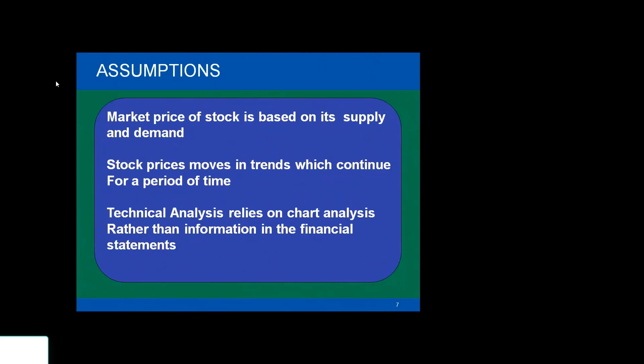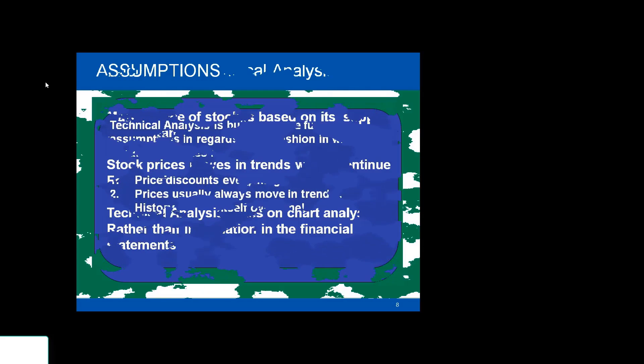The assumptions behind technical analysis are: the stock price is based on supply and demand — if demand outstrips supply, share prices go up, and if supply outstrips demand, prices fall. One assumption is that share prices always move in trends — if prices are going up they will continue to go up, and if falling, they will continue to fall. Technical analysis relies on chart analysis rather than financial statements such as the balance sheet, profit and loss account, and cash flow.